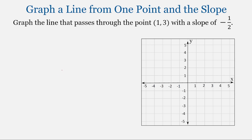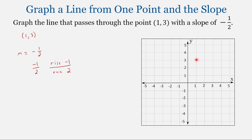Now let's look at one with a negative slope. We have the point 1, 3, which is on our line. Plotting that point, we're going to move to 1 on the x-axis and then up 3. This point is our starting point, 1, 3. We also know the slope is negative 1 half. We can rewrite this as negative 1 over 2, which means we're going to rise negative 1 — go down — and run 2 in the positive direction. From our start point, we go down 1 and run 2, giving us the second point.